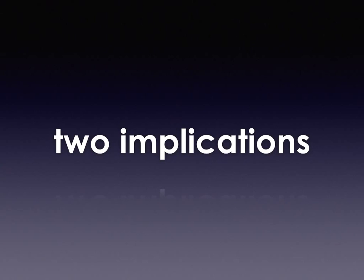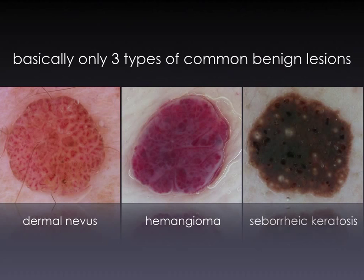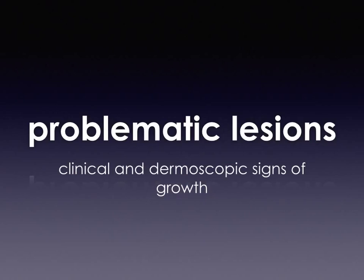The knowledge about the physiology of nevi has two practical implications. First, it explains that the most common benign lesions in the elderly are intradermal nevi of the Mischer or Uner type, as well as other common non-melanocytic lesions such as hemangioma or seborrheic keratosis. These lesions usually can be diagnosed with high confidence. Second, it explains that any new and/or growing melanocytic lesion in the elderly should be dealt with caution.